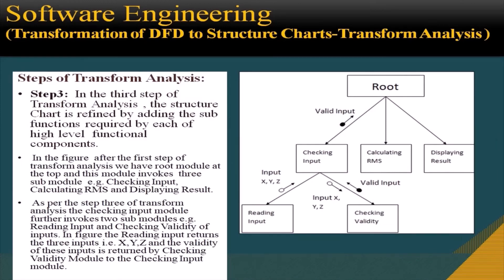As per step 3 of transform analysis, the structure chart is refined by adding sub-functions required by each high-level functional component. The root module invokes three sub-modules: checking input, calculating RMS, and displaying result. The checking input module further invokes two sub-modules: reading input and checking validity of inputs. Reading input returns the three inputs x, y, and z, and the validity of these inputs is returned by the checking validity module back to the checking input module.